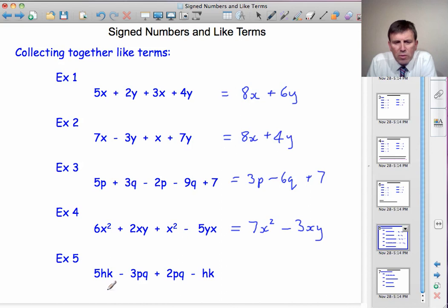Example 5. We've got hk's. We've got pq's. 5hk, minus hk. 5 minus 1 of them is 4 of them. So I've got 4hk. And the pq's. I've got minus 3pq, plus 2pq. Minus 3 plus 2 is minus 1. So that's minus 1pq. But I'm not going to write minus 1. I'm just going to write minus pq. It wouldn't be wrong if you put minus 1pq. But we normally miss the 1's out at the front.